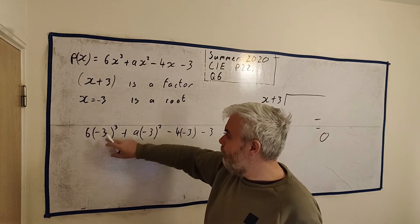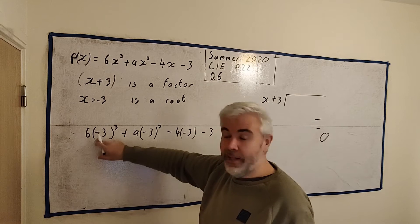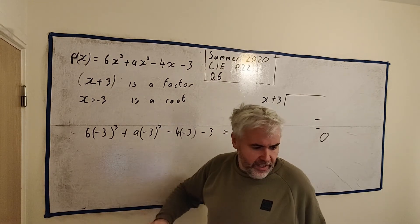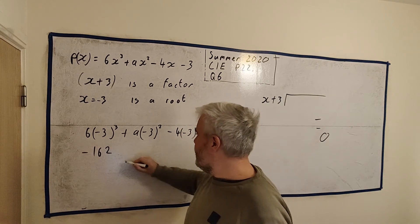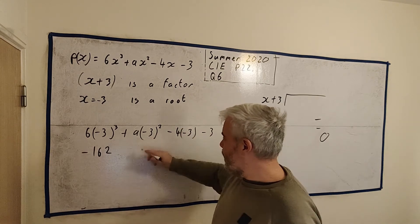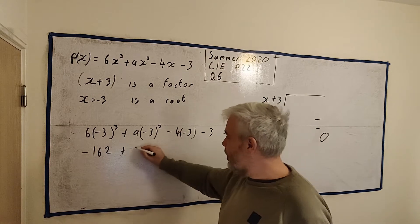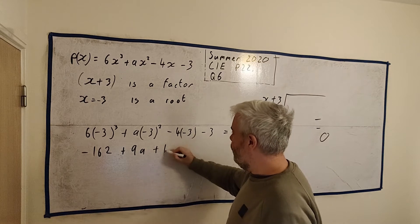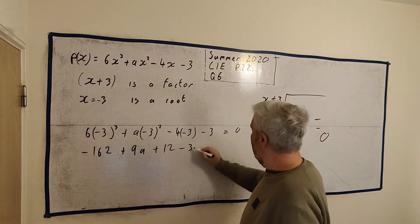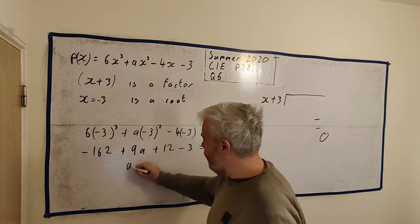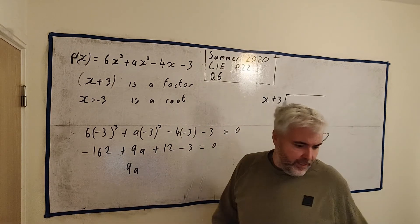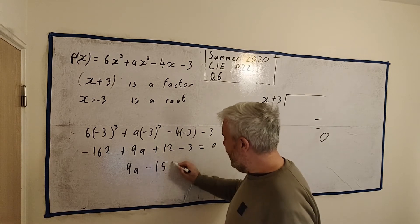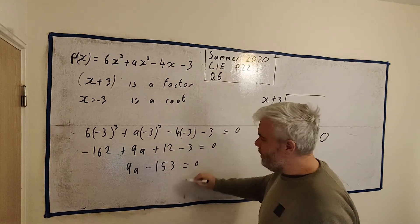But minus 3 cubed is 27, or minus 27. So 6 times minus 27 is minus 162. This one we could do in our head. Minus 3 squared is 9, so 9a. Minus 4 by minus 3 is plus 12, and then minus 3 at the end. Let's see, we have 9a, and if we put all of this in, just checking my numbers, we get 9a minus 153 equals 0.